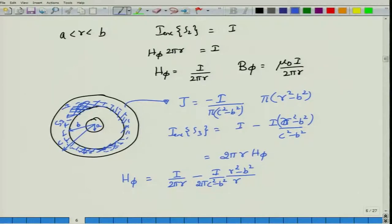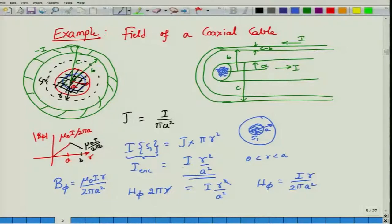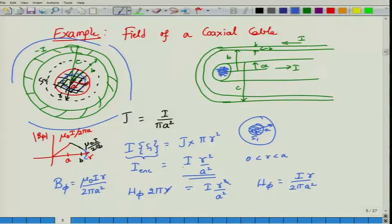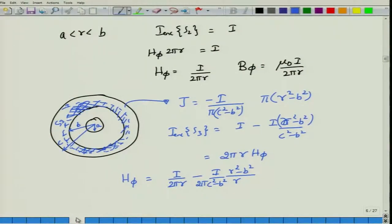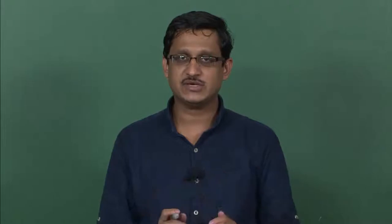At R equal to C, the (C squared minus B squared) terms cancel, H_phi becomes zero. For R greater than C, the total enclosed current is plus I from the inner conductor plus the return minus I from the outer conductor, giving zero net current. Therefore there is no magnetic field outside the coaxial cable — all fields are confined within the structure itself.